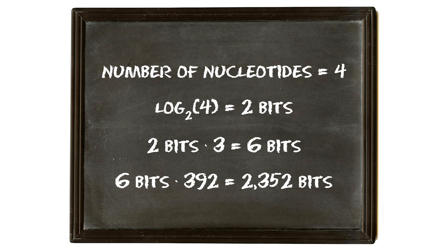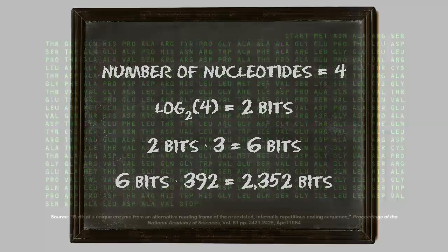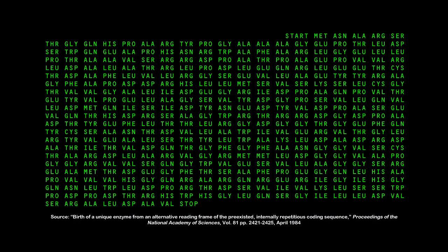2,352 bits of information that absolutely was not there before. And my source for this is from 1984 — 1984! Way to be current, creationists! That's total pwnage — with math! One mutation made a strain of bacteria more complex and created over 2,000 bits of information, with one mutation!